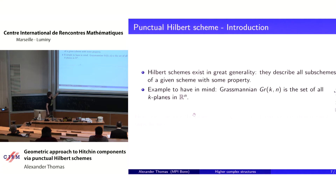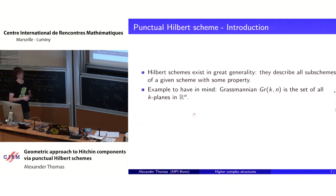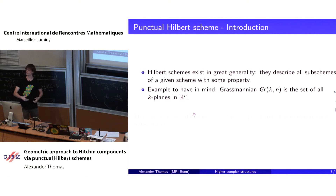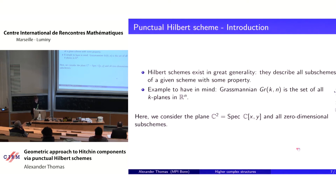Punctual Hilbert schemes, or more generally Hilbert schemes, exist in great generality — developed by Grothendieck. The idea is: you have some scheme, and the Hilbert scheme parametrizes all sub-schemes of some type. For example, if you have a vector space and look at all sub-vector spaces of some given dimension, that is just the Grassmannian — and it turns out the Grassmannian is a manifold. If you look at all sub-schemes of some type, it again forms a scheme.